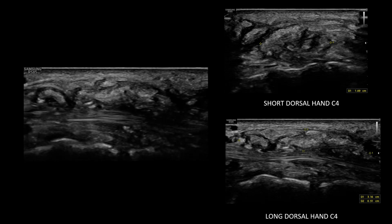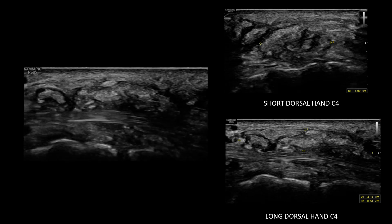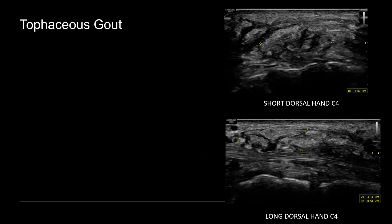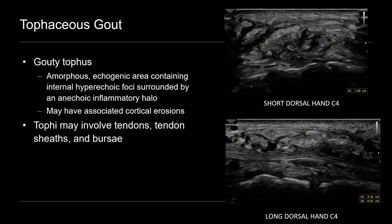This is another male patient in his 50s with a history of gout presenting with a right hand mass. In the area of the fourth extensor compartment, there's an amorphous echogenic mass-like structure. In long axis, it's directly overlying the extensor digitorum tendons of that fourth extensor compartment. With dynamic imaging — having the patient flex and extend the wrist — these amorphous echogenic structures partially surround the tendon and impinge upon it, but are separate from it. This is an example of tophaceous gout within the tendon sheath. A gouty tophus on ultrasound usually appears as an amorphous echogenic area containing punctate echogenic crystals surrounded by a thin anechoic inflammatory halo, and may have associated cortical erosions if they abut the bone.